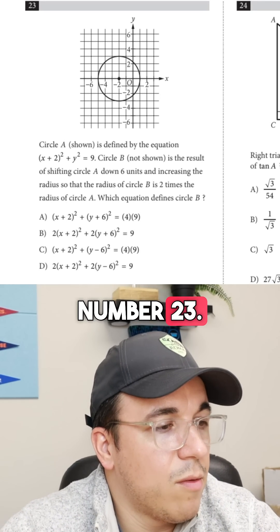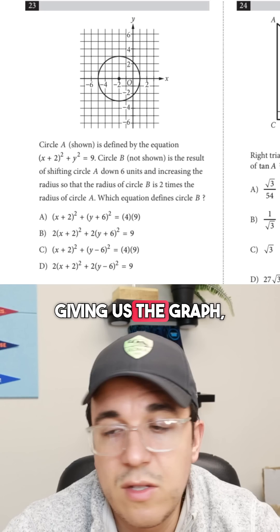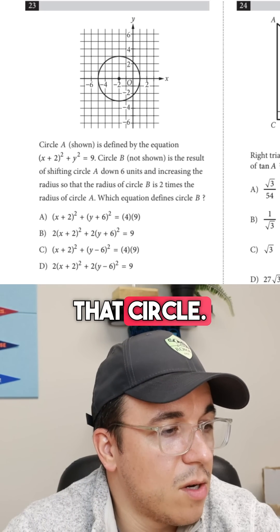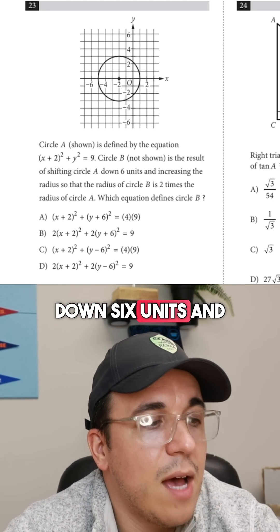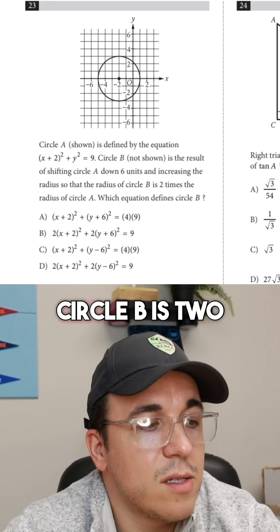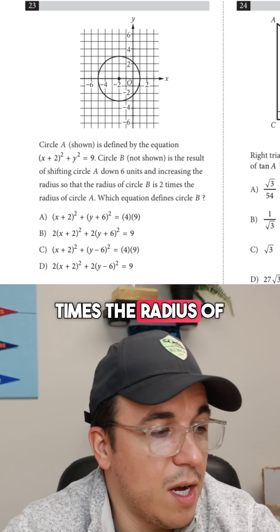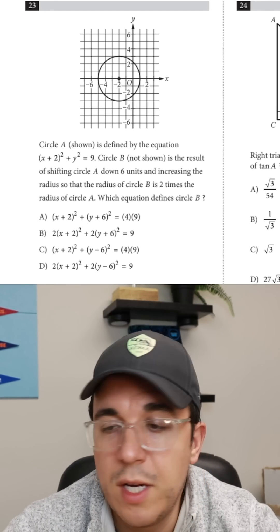All right, let's get into question number 23. So they're giving us a circle, and they're giving us the graph, the equation for that circle. Circle B, not shown, is a result of shifting circle A down 6 units and increasing the radius. So the radius of circle B is 2 times the radius of circle A. Which equation defines circle B?